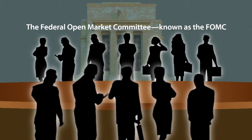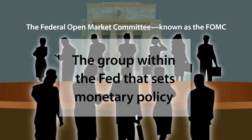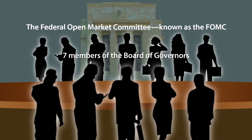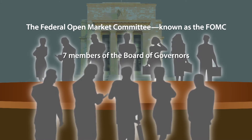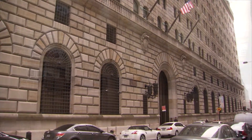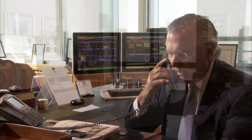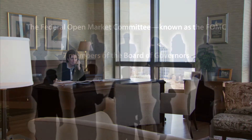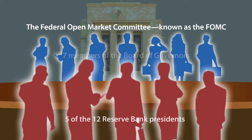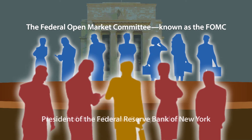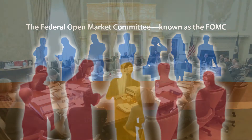The Federal Open Market Committee, known as the FOMC, is the group within the Fed that sets monetary policy. The seven members of the Board of Governors and all 12 Reserve Bank presidents, including those who aren't voting members, attend FOMC meetings. Though they all participate in discussions, only the seven Board members and five of the 12 Reserve Bank presidents are voting members at any one time. One of the five voting presidents is always the president of the Federal Reserve Bank of New York. The other Reserve Bank presidents vote on a rotating basis.